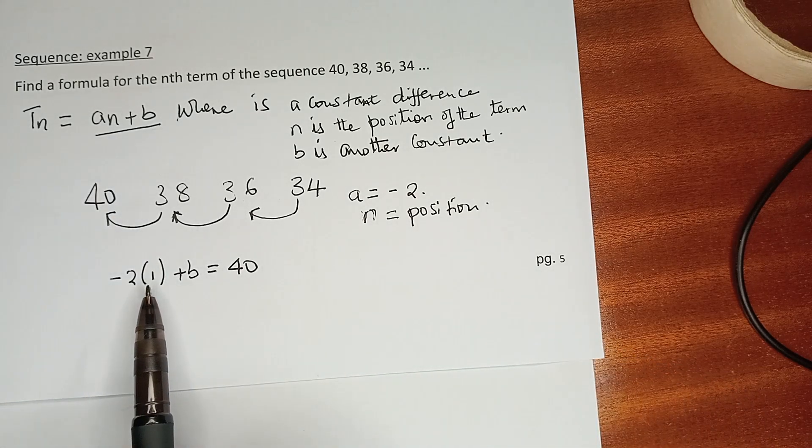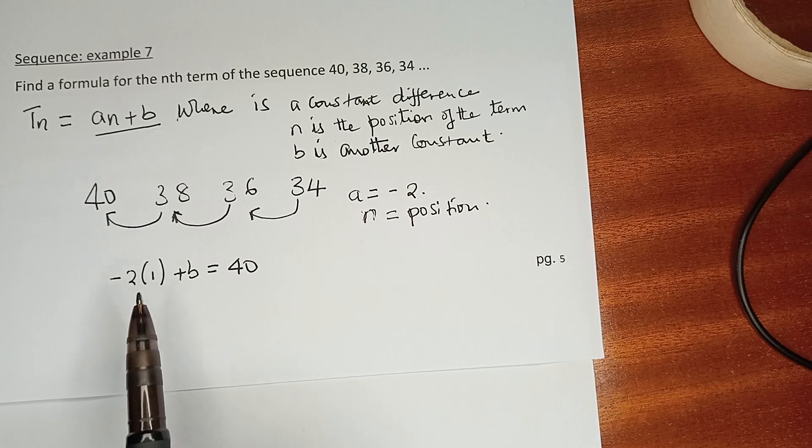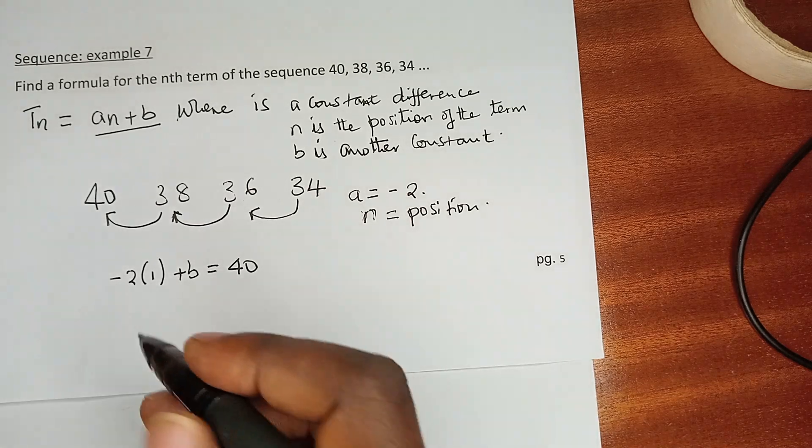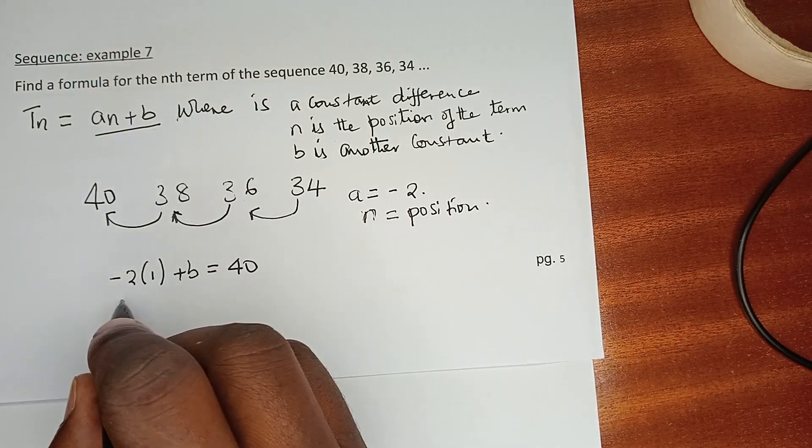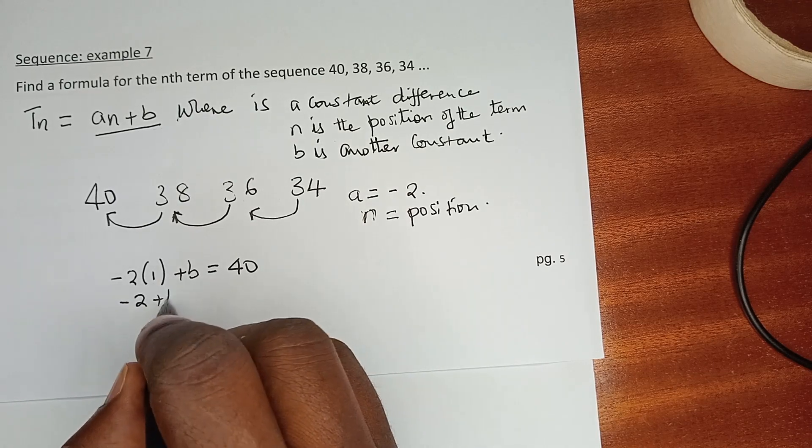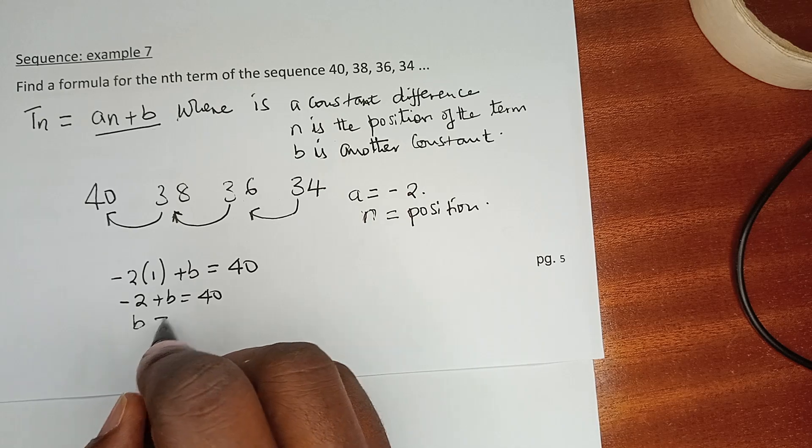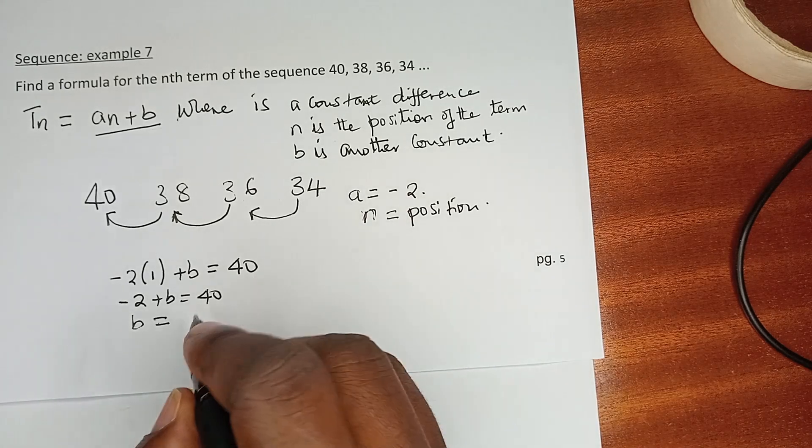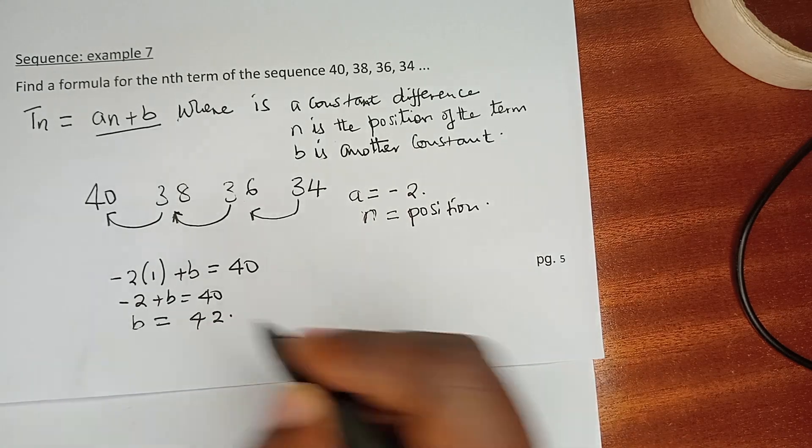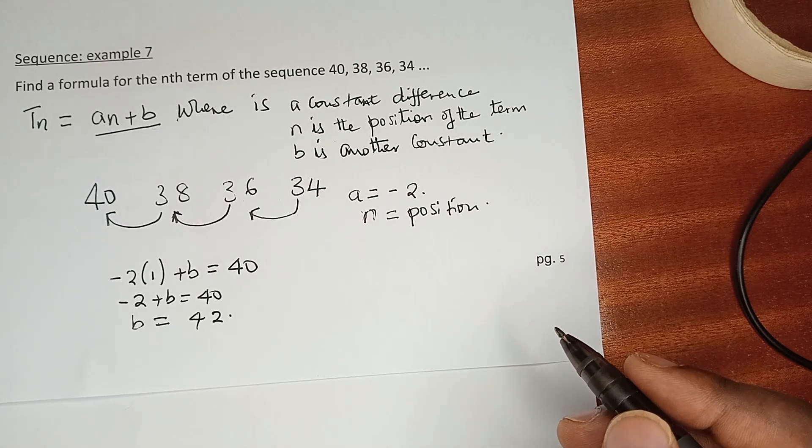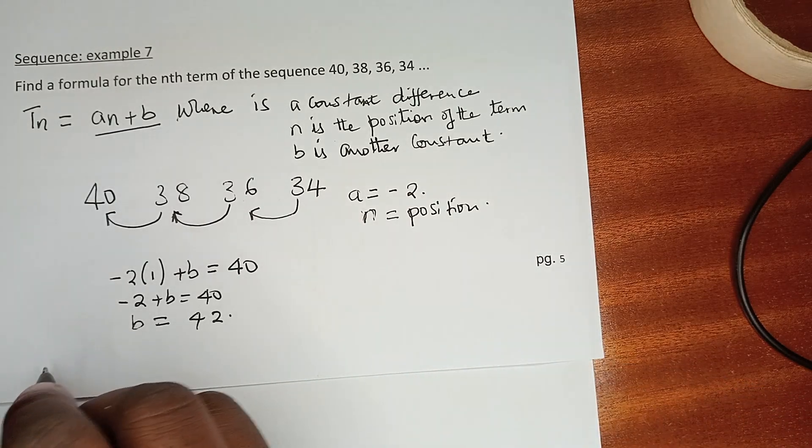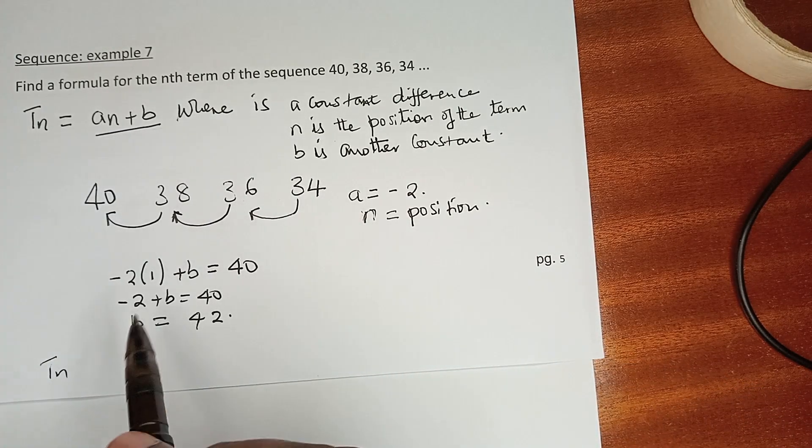40. We have used now 40 and that is why our n is 1, because 40 is in the first position. It goes without saying that we are saying that -2 + b is equal to 40, which means b is equal to 40 + 2 which is 42. So